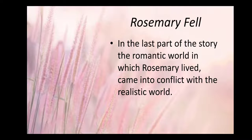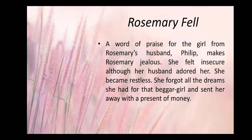When we come to the last part of the story, the romantic world in which Rosemary lived came into conflict with the realistic world. Her romantic world comes from books in which everything is nice and the rich are ready to help the poor. But the reality is that she has brought the poor girl into her home — the home where her husband also lives, and the girl is being looked after in the presence of her husband. As soon as her husband praises the girl, it makes Rosemary jealous. She felt insecure, although her husband adored her. She became restless, forgot all the dreams she had for the beggar girl, and sent her away with a little money.